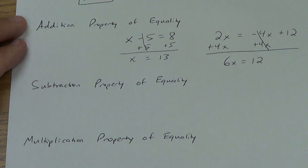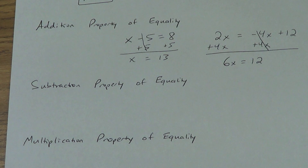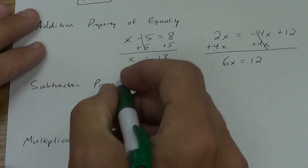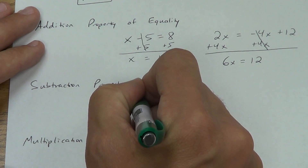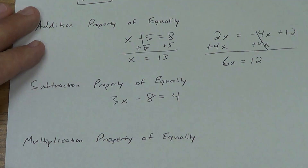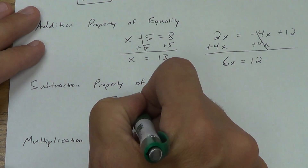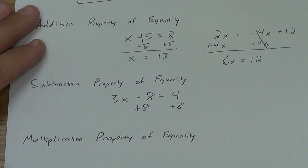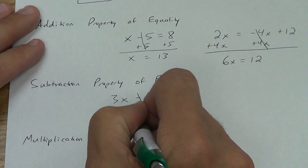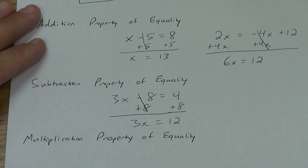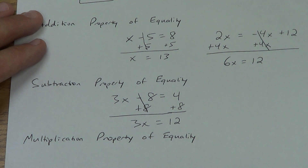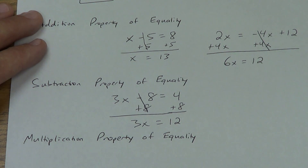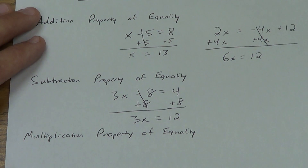Next one is the subtraction property of equality. It basically says the same thing, except it talks about subtraction — you're allowed to subtract the same amount from both sides of an equal sign. So maybe you get something like 3x minus 8 equals 4. We add 8 to both sides, same amount, these cancel, and we get 3x equals 12. The subtraction property just says you can subtract the same thing from both sides of the equal sign.